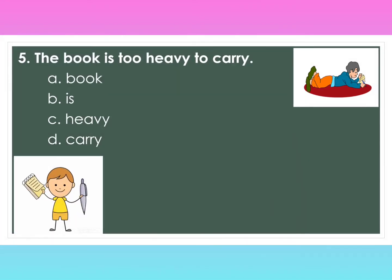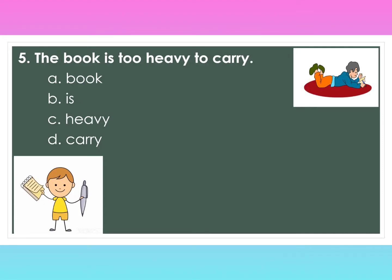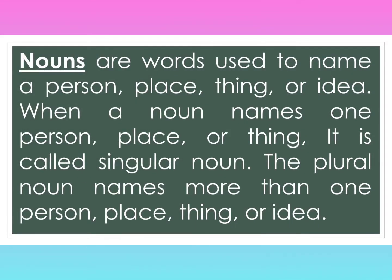Number five: The book is too heavy to carry. A. book, B. is, C. heavy, D. carry. Now, nouns are used to name a person, place, thing, or idea. When a noun names one person, place, or thing, it is called a singular noun. The plural noun names more than one person, place, thing, or idea.